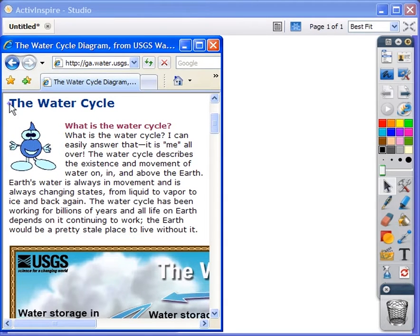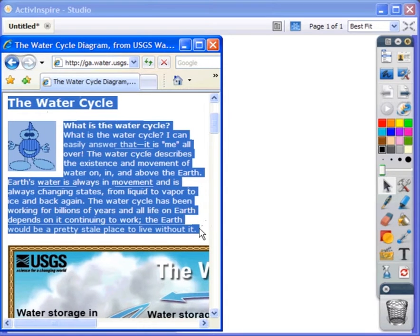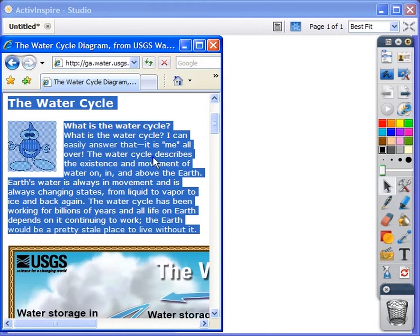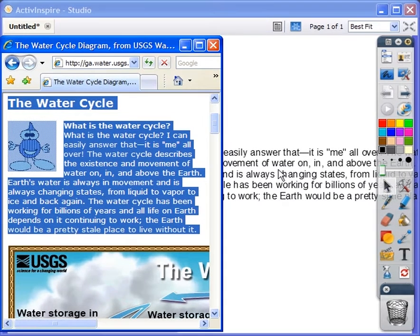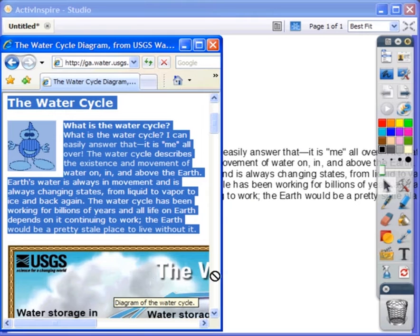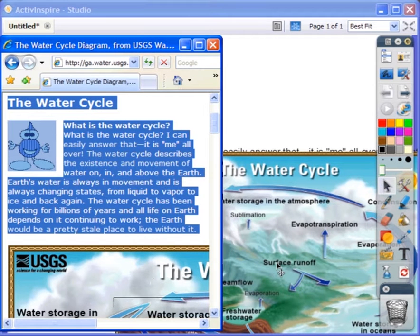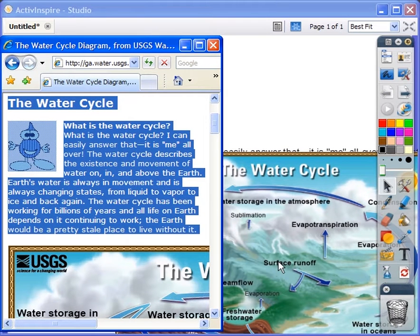Select the text you want to copy and drag it from the web page onto your flipchart page. Now click on the image and drag it from the web page onto your flipchart page. When ready, minimize the browser window.